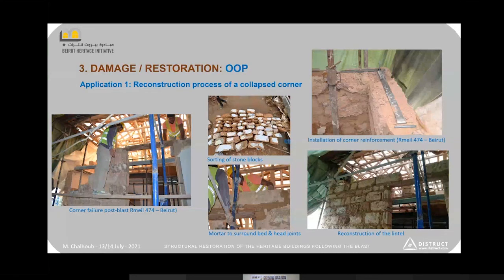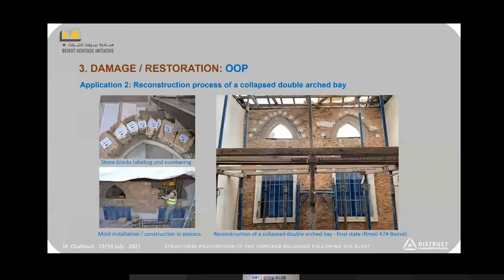To enhance the resistance of the corner against lateral detachment, we add reinforcement fixed vertically with a threaded rod, ensuring continuity and good resistance at the corner. The second application is the reconstruction of a double archway: stone blocks are labeled and numbered, a mold is installed to achieve the correct geometry compatible with the initial configuration, and masonry is rebuilt step by step, stone by stone.